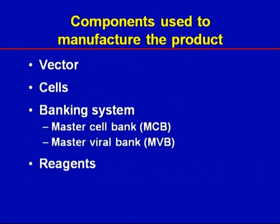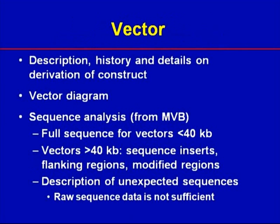You'll need to tabulate and include information on all raw materials used to manufacture your product, including the vector, cells used for manufacturing your vector or as part of your final product, cell and viral banking systems, and all other reagents used in manufacturing. Additional information may be needed if any of your reagents are from animals. For your vector, you will need to submit information on the history and details on the derivation of the vector construct. Please submit a vector diagram outlining the essential elements of the vector, and a full sequence analysis for gene therapy vectors less than 40 kilobases in size — this sequencing should occur before you start your clinical trial. For larger vectors, full sequencing is encouraged prior to Phase III.